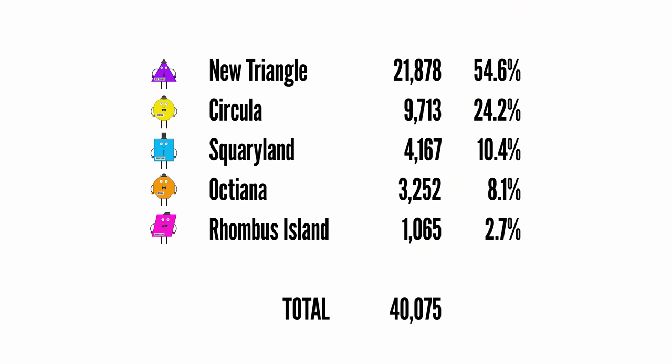Surely there's an easy solution: you just rank everyone by what fraction of a cookie they deserve, then start rounding up from the one who's closest to the next cookie up, work your way down the list until you run out of cookies, and whoever was closest to being rounded down anyway — despite being above a half — they miss out. This is exactly the problem which faced the early United States in the late 1700s, and that solution is exactly what Hamilton proposed. The Alexander Hamilton method was not without its problems. I'll demonstrate with our now five-shape United Shapes, joined by Octiana and Rhombus Island, with adjusted but still very small populations — a total of 40,075.